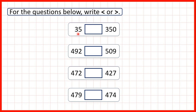First, we have 35 and 350, so we need to see which is larger and which is smaller. When we're comparing numbers, if a number is a whole number and it has more digits, it will always be larger than a number with fewer digits. So 350 is a three-digit number and 35 is only a two-digit number.